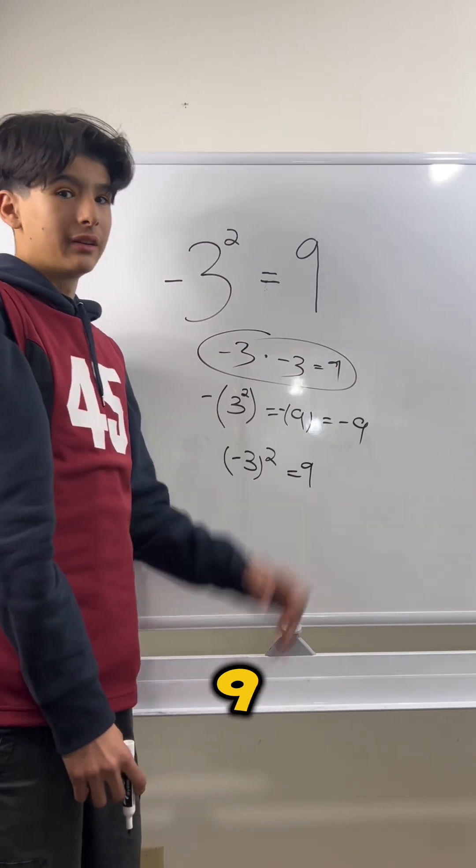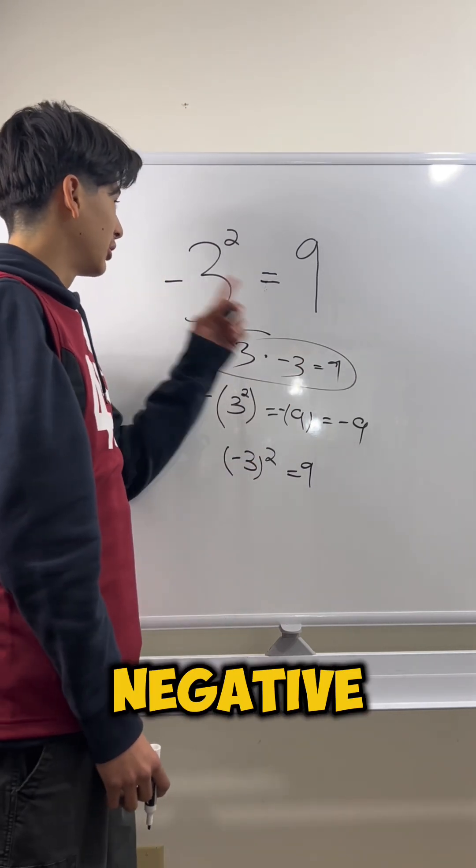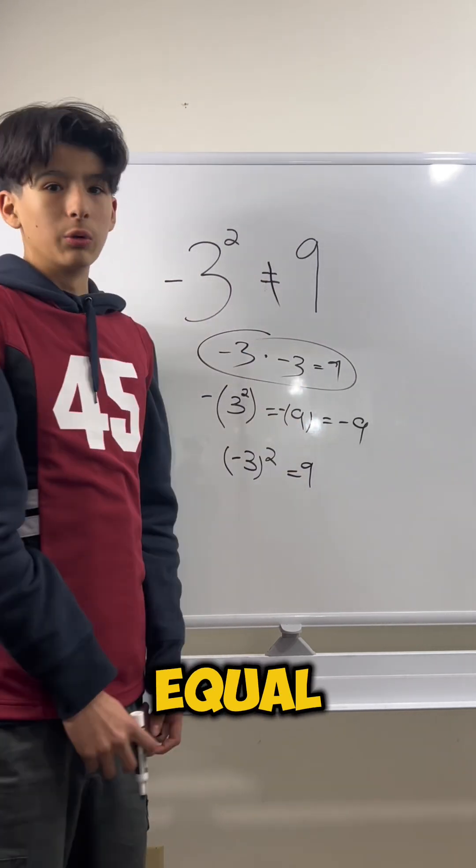That doesn't look like a 9, but it's 9. So that is why negative 3 squared does not equal 9. God bless.